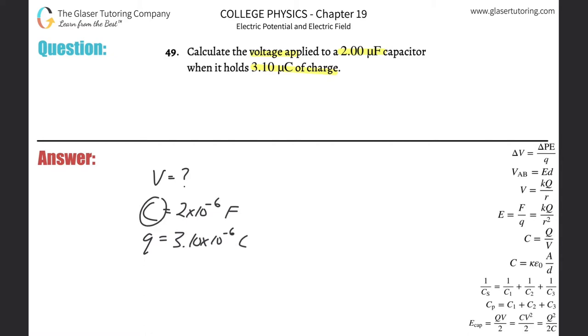If the two Cs aren't confusing you, then you're better than me. So this stands for capacitance, and this C stands for coulomb.